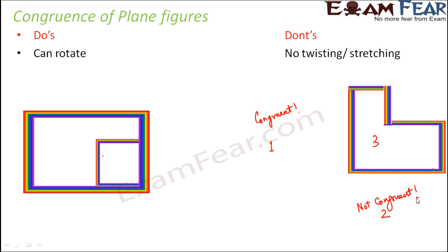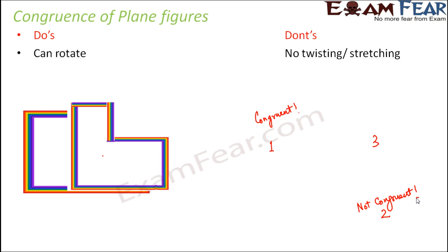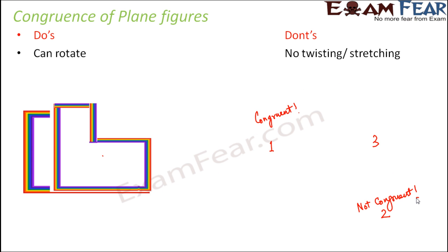Now let us look at the third figure. If you try to place this figure on the given figure, you see that the shape is quite different. However, if we were allowed to twist, we could twist this arm of the figure — it is like an L shape — and twist it to form a rectangle shape. But twisting is not allowed, therefore this figure is also not congruent. So figure 3 is not congruent because it has a different shape altogether, and figure number 2 is not congruent because it has a different size altogether. But figure number 1 is congruent.